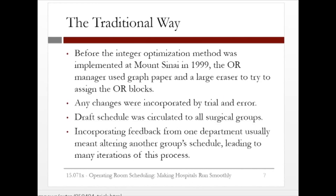The traditional way of doing this was not by using integer optimization. Before integer optimization was implemented at Mount Sinai in 1999, the operating room manager used graph paper and a large eraser to try to assign the operating room blocks, with any changes incorporated by trial and error. The operating room manager made a draft, and this schedule was circulated to all of the surgical groups. However, incorporating feedback from one department usually meant altering another group's schedule, leading to many iterations of this process. In the next video, we'll design an integer optimization formulation for this problem.